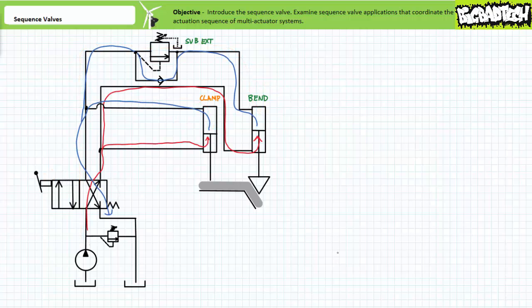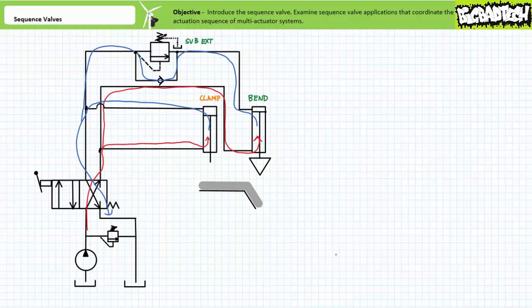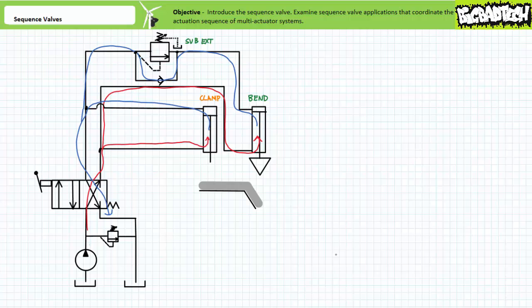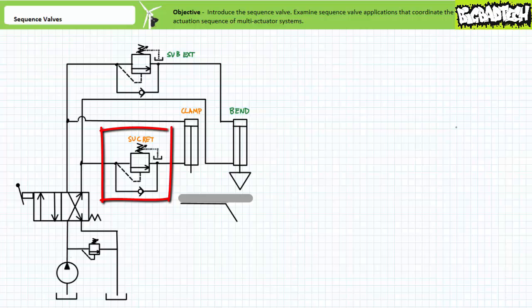When the directional control valve is shifted to the cross connect position, the check valve bypass bypasses the sequence valve and allows the bend cylinder to retract with no pressure precondition. Note that during retraction, both cylinders are placed in parallel with one another, and sequence of retraction is pressure dependent. While suitable for some applications, this might not be the most desirable scenario if we wanted to ensure the clamp cylinder maintained the workpiece secure while the bend cylinder retracted, and then retract the clamp cylinder as a final step.